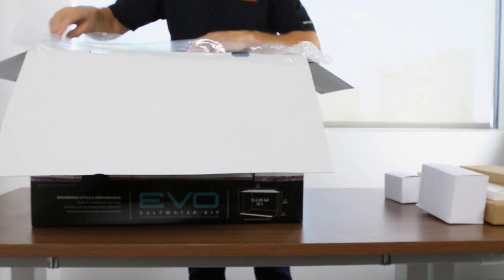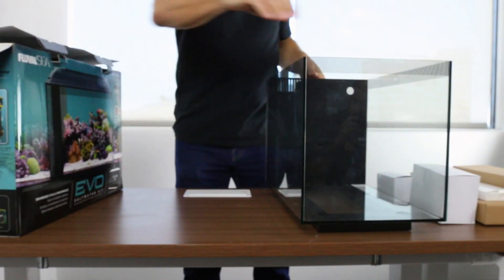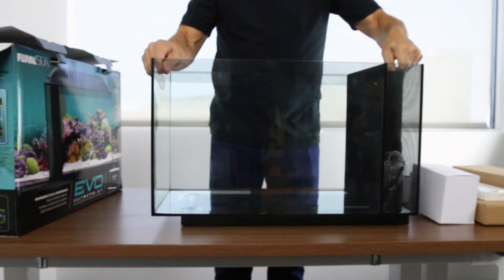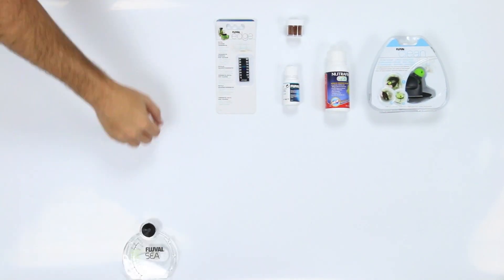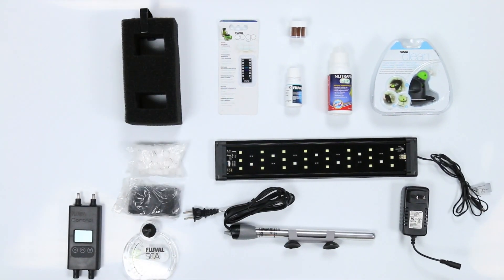Unpackage your tank on a sturdy surface that's out of direct sunlight and away from heating and air conditioning vents. You'll find everything that you need for assembly inside the tank in the accessories package.